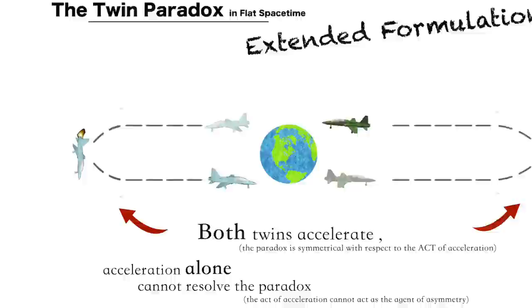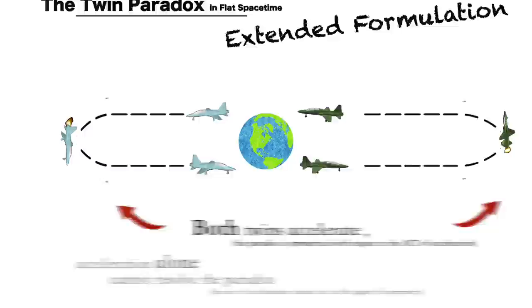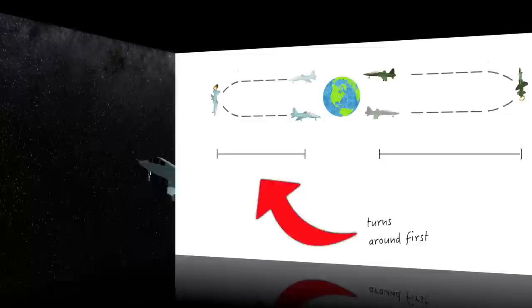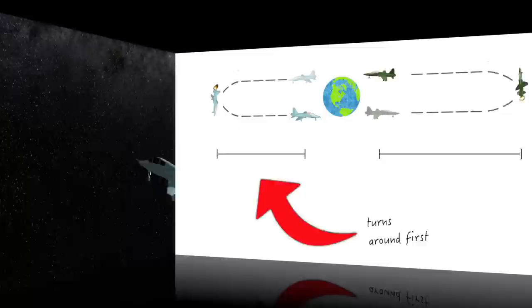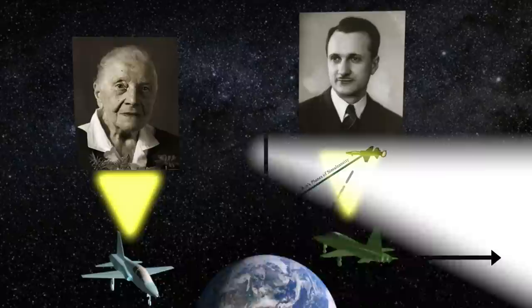This should already indicate to us that acceleration cannot be the only decisive factor in resolving the paradox. Indeed, in a case such as this, the determining factor becomes not who did or didn't accelerate on their journey, but rather who accelerated or turned around earlier. That is, if say Alice is the one who turns around first, then upon reunion with her brother, she will be the older one because her planes of simultaneity will skip over less time than Bob's. Indeed, the sooner Alice turns around in her journey, the older she will become with respect to Bob.